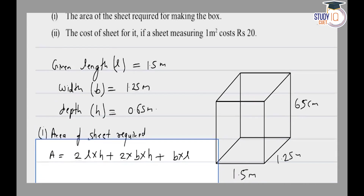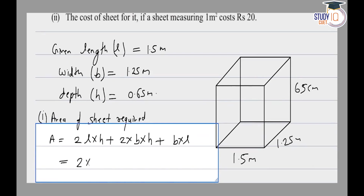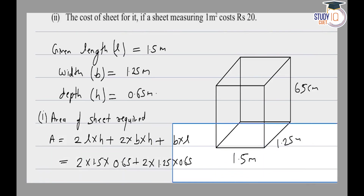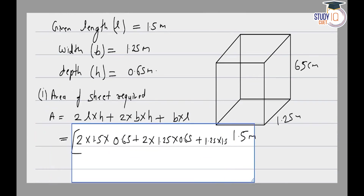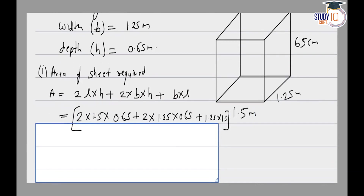Plus, in this we will use only the lower face — width into length. So the total comes to: 2 into 1.5 into 0.65 plus 2 into 1.25 into 0.65 plus 1.25 into 1.5. This gives us 1.95 plus 1.625 plus 1.875.